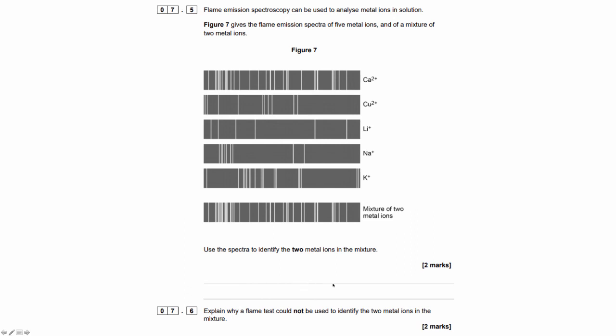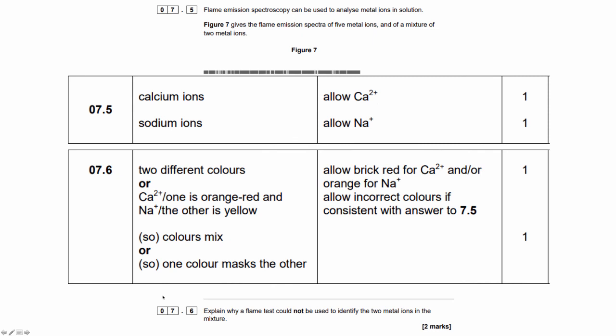Explain why a flame test could not be used to identify the 2 metal ions in the mixture. It's because a flame test would give a colour, and the 2 metal ions would give colours which would make the flame colour indistinguishable. So the correct answers are calcium and sodium ions, and 2 different colours. So the colours would mix or mask each other.